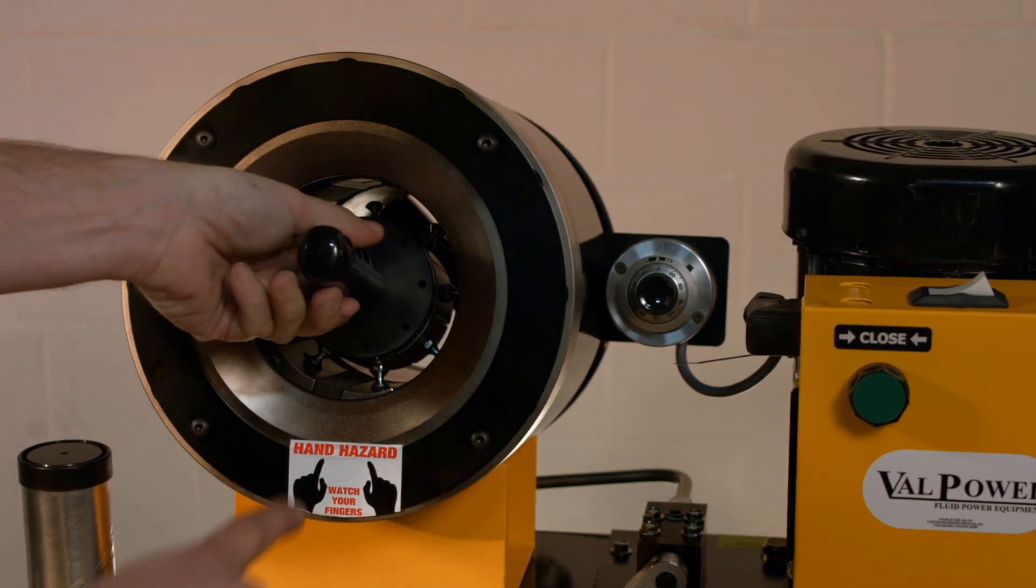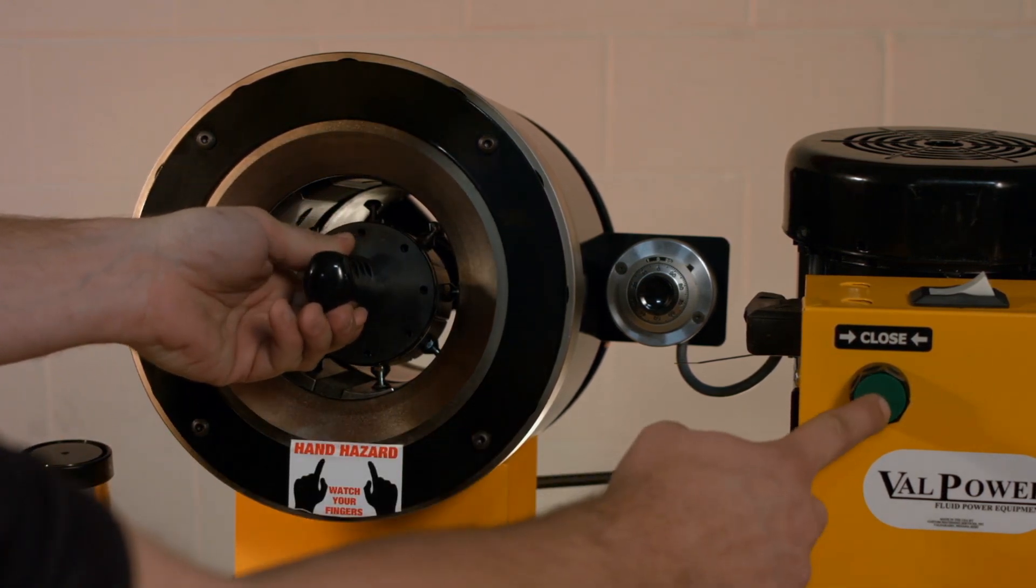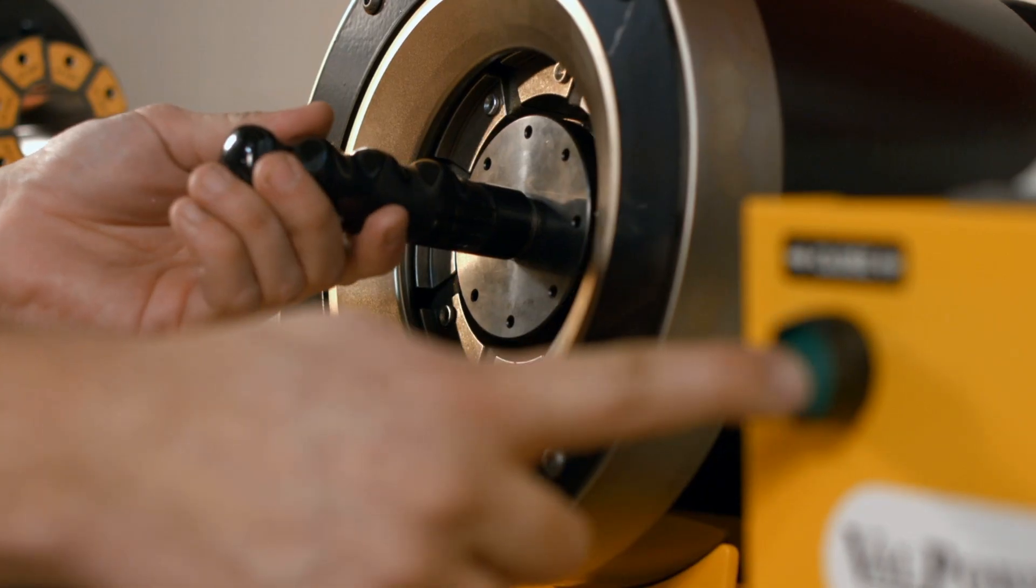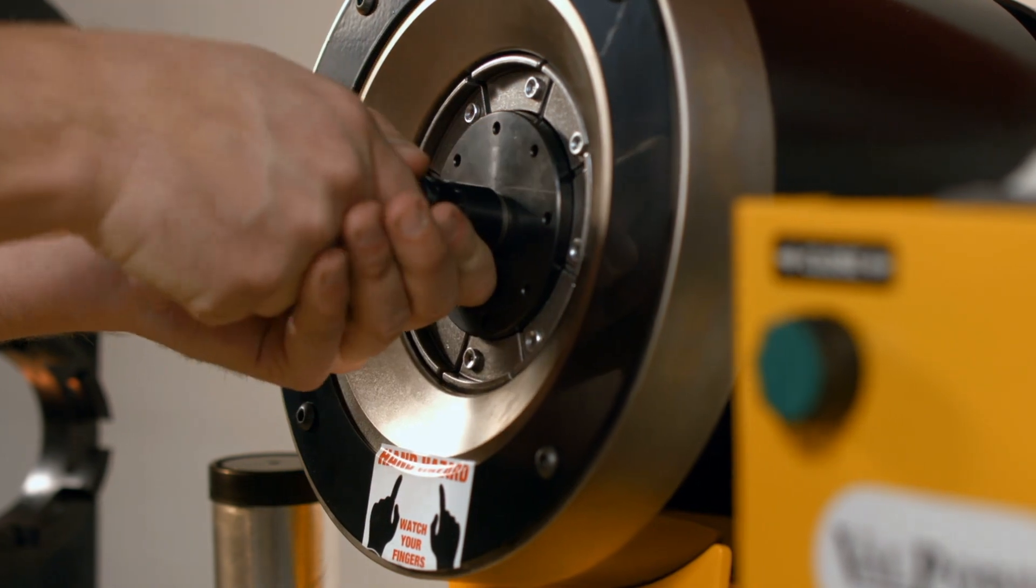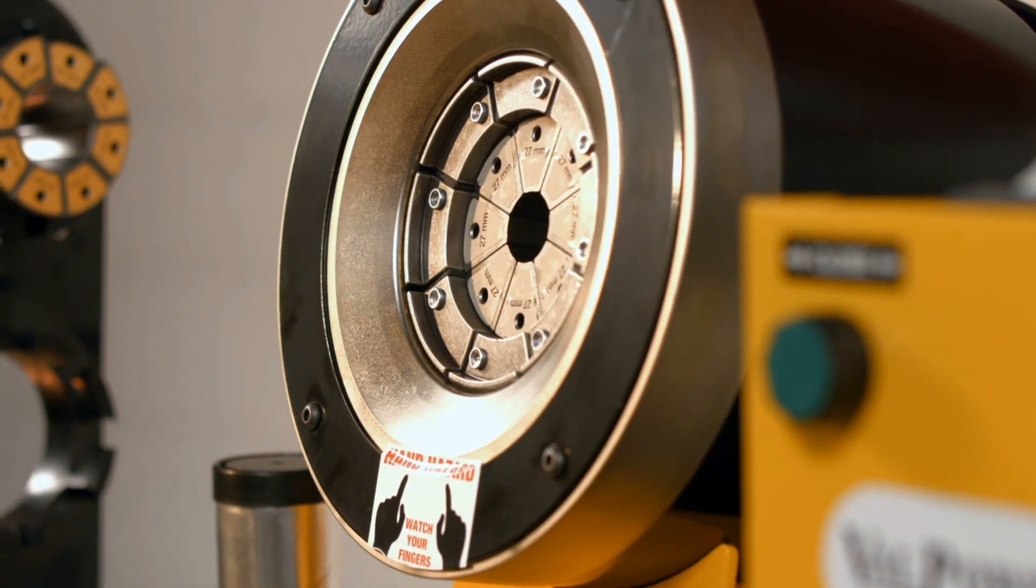Make sure that the retaining pins enter the location holes in the master die. The die will click into place when it is properly positioned. Withdraw the quick change tool when the head is fully closed.